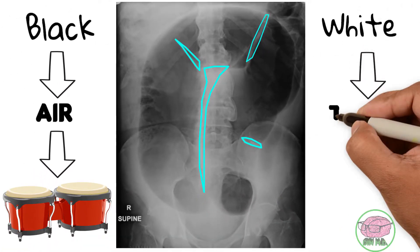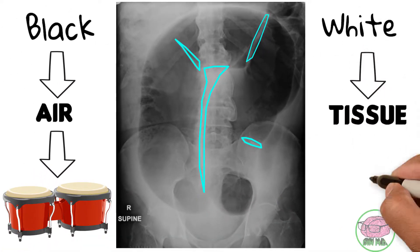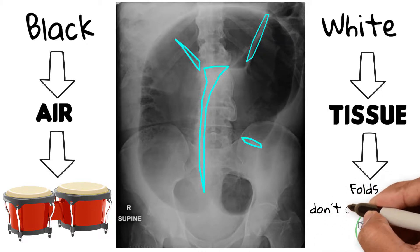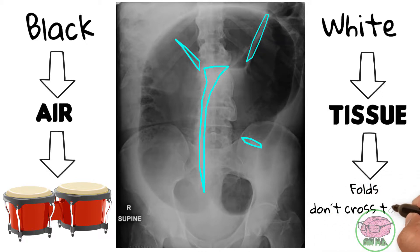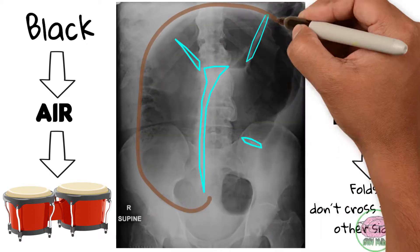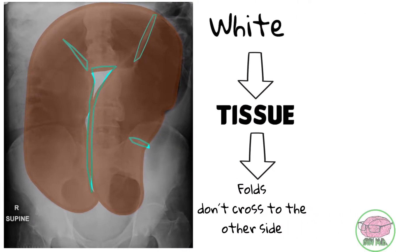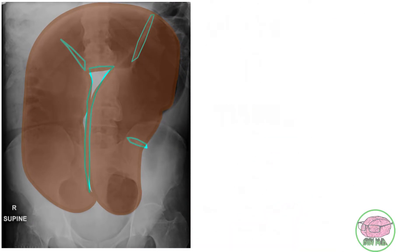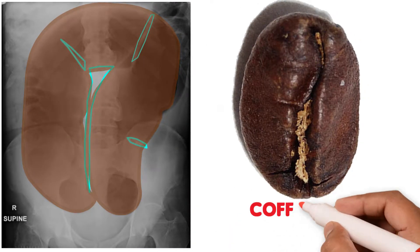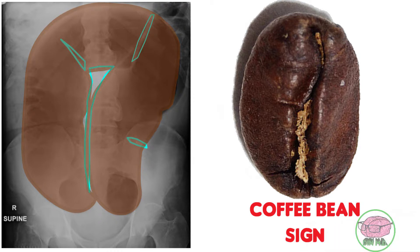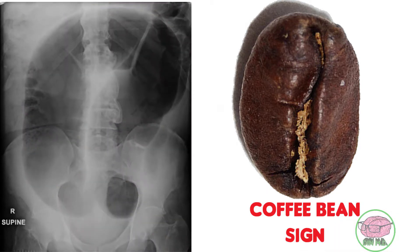These white structures have tissue density and look like folds, but they don't cross to the other side of the image. Taking the tissue densities and air densities together, we get a shape like a coffee bean — the coffee bean sign — and comparing it with our patient's x-ray, the shape is identical.